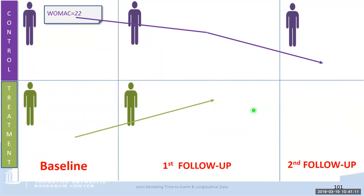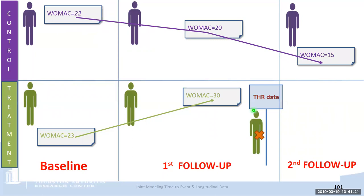As Carolina mentioned, ignoring the mechanism of missingness can cause bias in LMM estimates. Here is an example: in a clinical trial with PT treatment and waitlist control, a person from the waitlist group completes baseline and both follow-up visits, while a person from the PT group drops out before the second follow-up because they were not eligible — for example, because they had total hip replacement surgery. Their data from the second follow-up are missing. In the joint model framework, dropout time can be considered a survival outcome, and the longitudinal submodel can be used to obtain valid inferences with correction for this non-ignorable dropout.